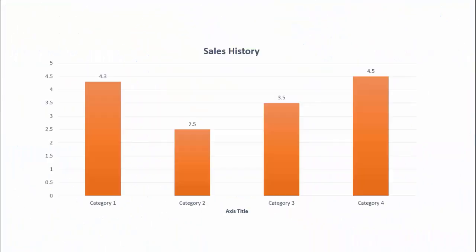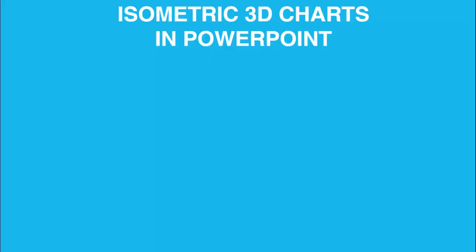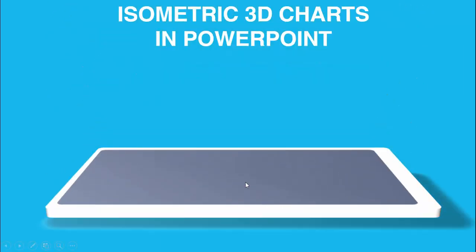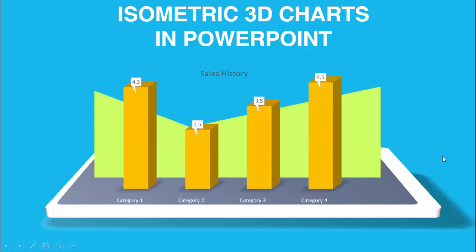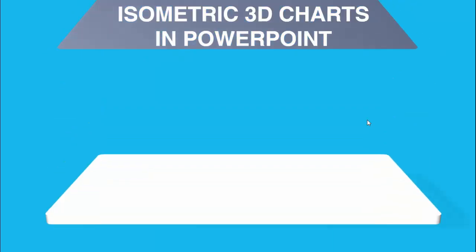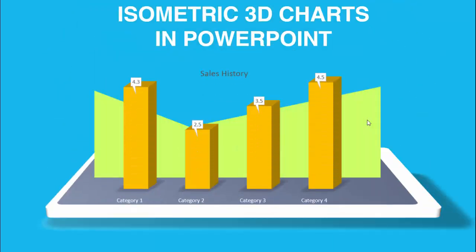In today's tutorial I'm going to show you how to convert a normal 2D chart — a flat chart with a sales history and four categories — into something more visually engaging. I'll show you how I changed the background color, added a 3D tablet or mobile design with a shadow effect, and how you can also use it as an area chart. You can see the difference from before to after.